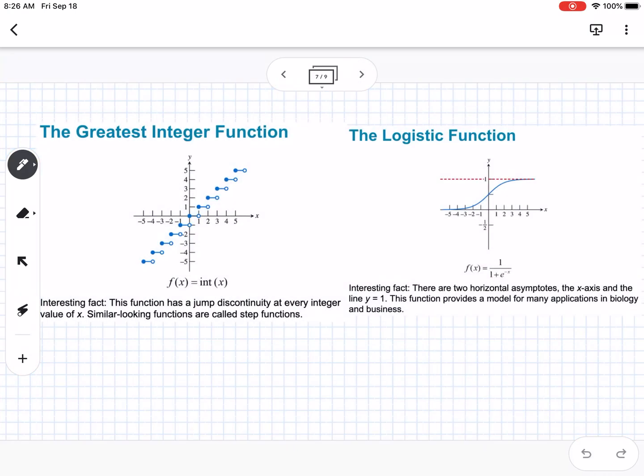Then we have the greatest integer function, also called a step function. The function has a jump discontinuity at every integer value of x. Similar looking functions are called step functions.